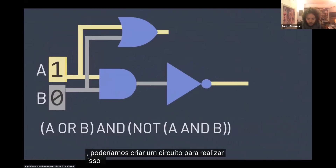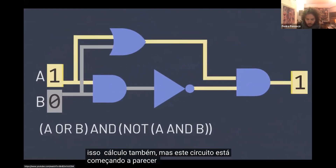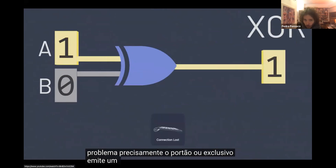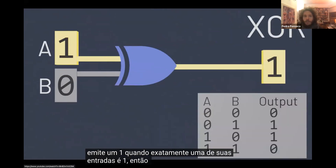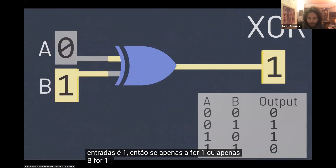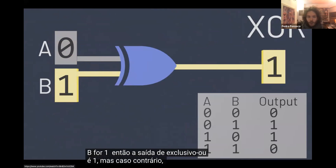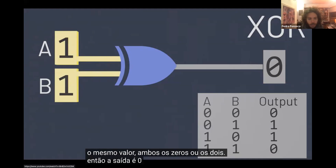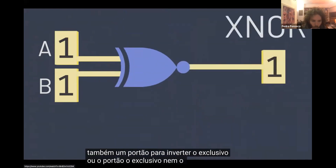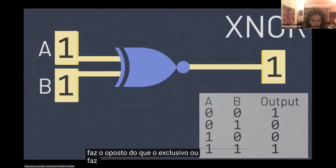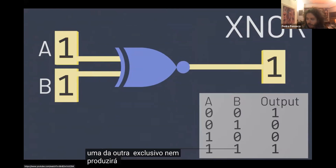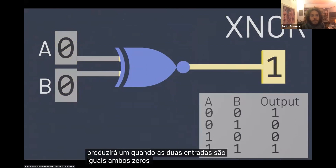We could create a circuit to perform this calculation, but this circuit is starting to look fairly complex. There's a logic gate to solve this problem precisely: the exclusive OR gate outputs a 1 when exactly one of its inputs is a 1. So if only A is 1, or only B is 1, then the output of exclusive OR is 1. But otherwise, if both inputs have the same value — both 0s or both 1s — then the output is 0. And just for completeness, there's also a gate for inverting the exclusive OR gate: the exclusive NOR gate. This gate does the opposite: while exclusive OR outputs a 1 when the two inputs are different, exclusive NOR will output a 1 when the two inputs are the same — both 0s or both 1s.